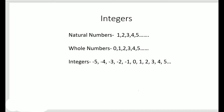Hello students, in this lesson we shall learn about integers. What are integers? Well, the first numbers to be discovered were natural numbers. Natural numbers start from one: one, two, three, four, five, and so on. If we include zero in this set of natural numbers, we get a new collection of numbers — our whole numbers. Whole numbers start from zero: zero, one, two, three, four, five, and so on.